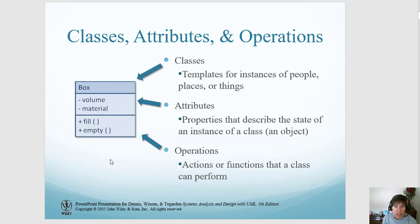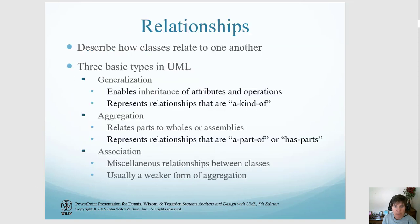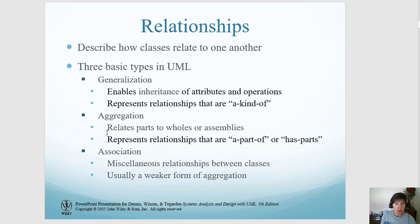After we define the classes, we need to identify the relationships between the classes. There are three basic types of relationships: generalization, which involves inheritance of attributes and/or operations and represents a 'kind of' relationship; aggregation, which relates to parts, or things that are 'a part of'; and association, which is a miscellaneous relationship for all others that are not generalization or aggregation.